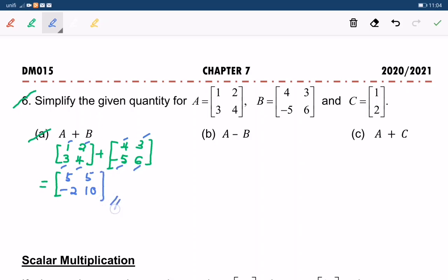Next, B. Subtraction of two matrices, which is A minus B. A is 1, 2, 3, 4 minus B, where B is 4, 3, negative 5, 6.